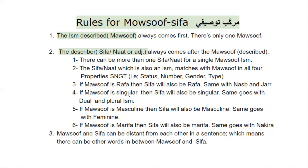The same goes with number. If masuf is singular, then sifah is also singular. If masuf is dual, then sifah is also dual. If masuf is plural — three or more — then sifah will also be plural. And gender will also match: if masuf is masculine, then sifah is masculine; if masuf is feminine, then sifah will also be feminine. Then comes the type — the last property. Type also matches: if masuf is marifa, then sifah is also marifa; if masuf is nakira, then sifah will also be nakira.